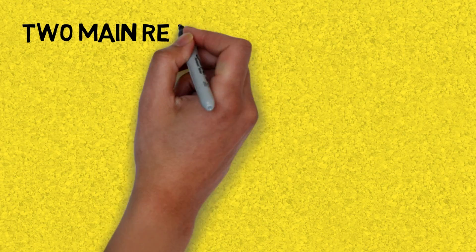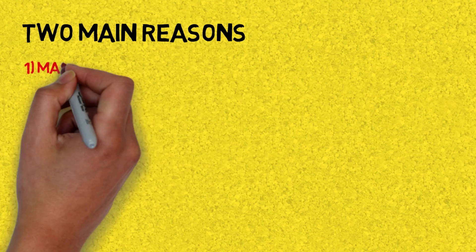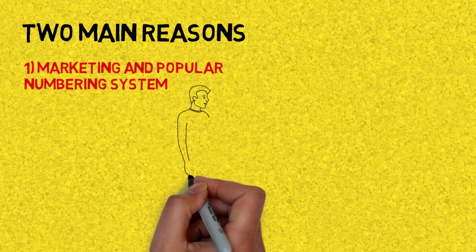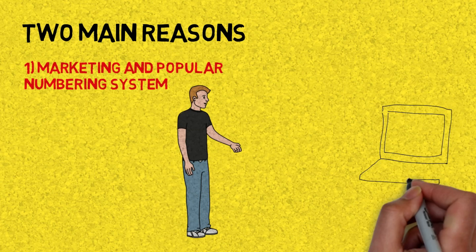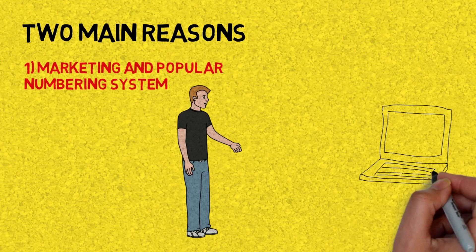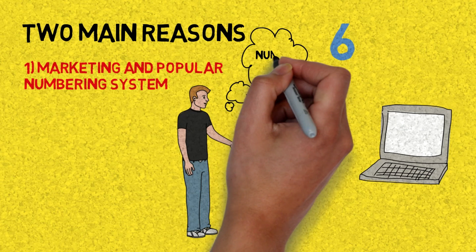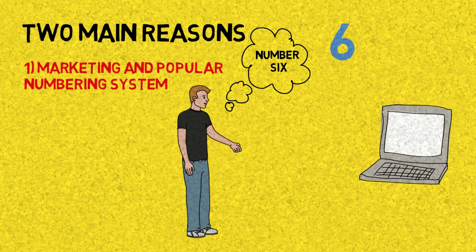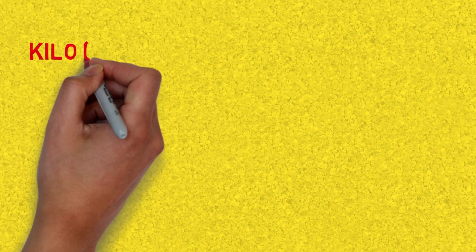There are two main reasons this happens. Reason number one is related to marketing and how we as humans use a completely different system for numbers compared to computers. We're not used to the binary base-2 system — we're actually used to decimal systems. Numbers for us go 0, 1, 2, 3, 4, 5, 6, 7, 8... and marketers capitalize on that, of course.